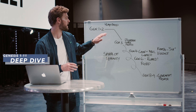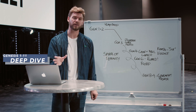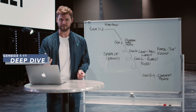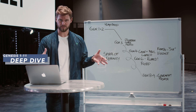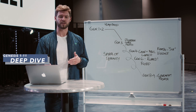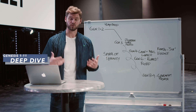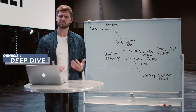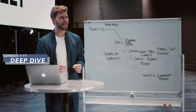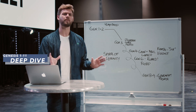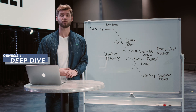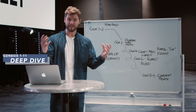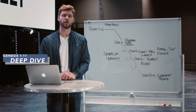Genesis 1:31 says 'God saw all that he had created and behold it was very good.' This world that God has created — ordered, beautiful, good, full of life and flourishing with human beings in charge — is very good. In order to rule this world the way humans have been commissioned, they have to have transformative power — a power to actually change the world that they touch. You come in contact with humans all the time and they change your reality.